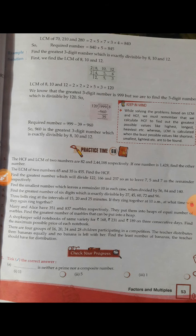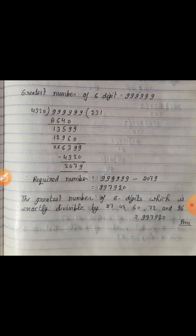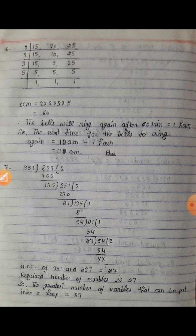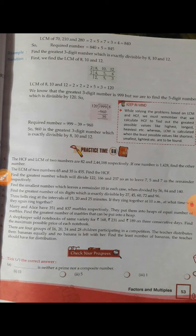Question number 7: Mary and Alicia have 351 and 837 marbles respectively. They put them into heaps of equal number of marbles. Find the greatest number of marbles that can be put in a heap. Greatest number के लिए HCF find करते हैं। HCF of 351 and 837 = 27. Answer is 27.